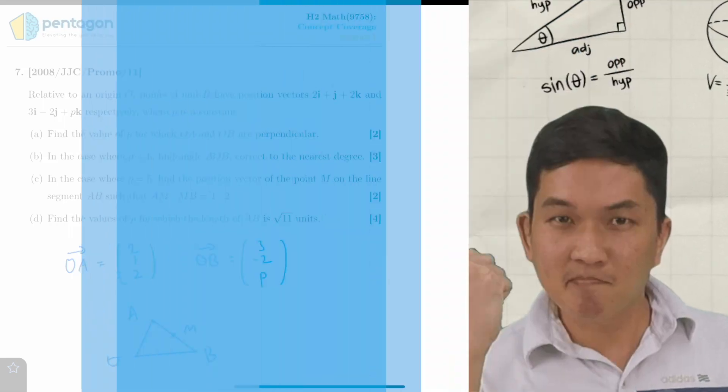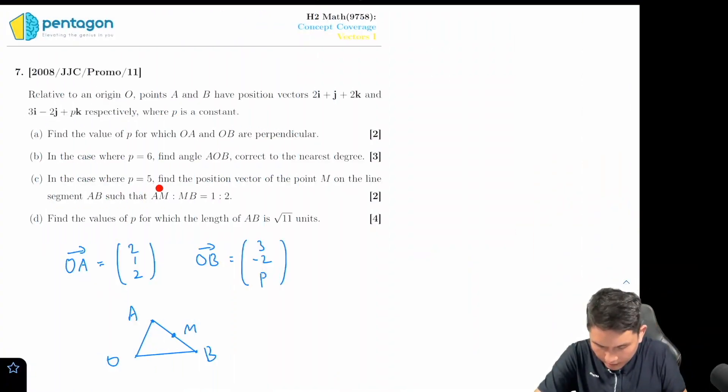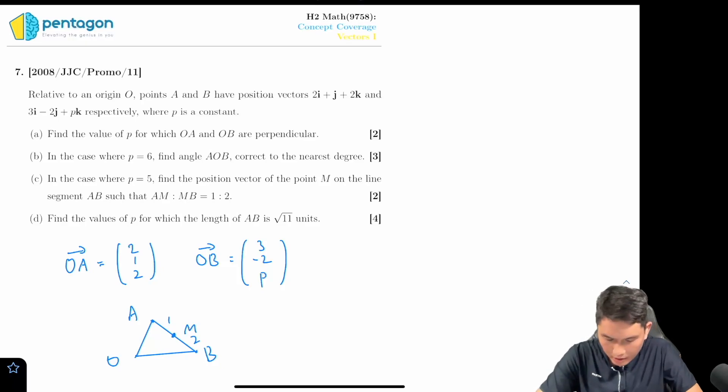Welcome back to part c. Now in part c, p is equals to five and we have to find the position vector of m, where m is in between AB.